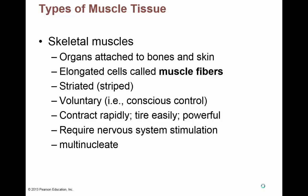Skeletal muscle, the main one we focus on, attaches to bones and or skin. They're elongated cells — very long cells called muscle fibers. The cells are so long, instead of calling them just a cell, we call them a muscle fiber. They are striated, meaning they appear striped, and they're voluntary — we can control them. They contract very quickly but tire very quickly. They're powerful, require nervous system stimulation, and are multi-nucleate, having lots of nuclei.